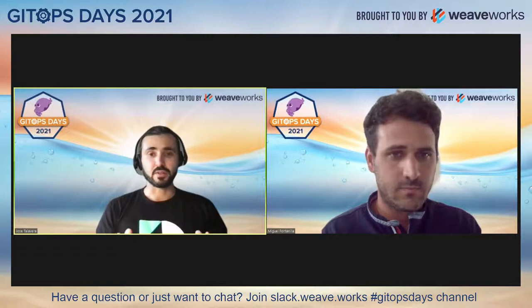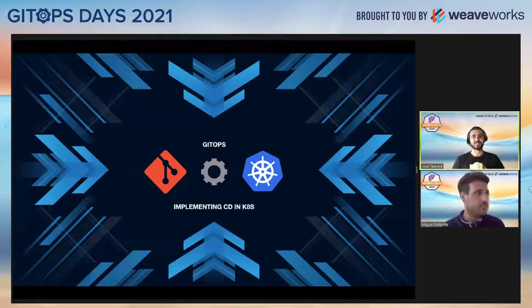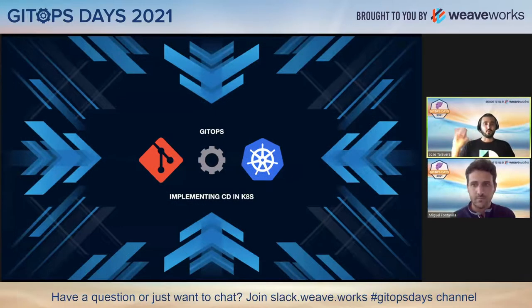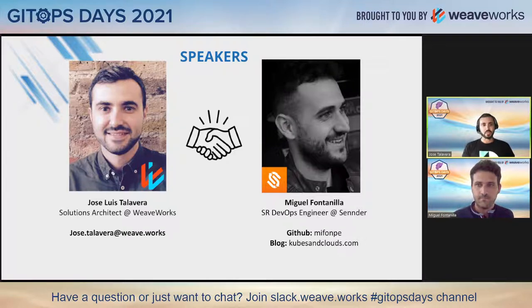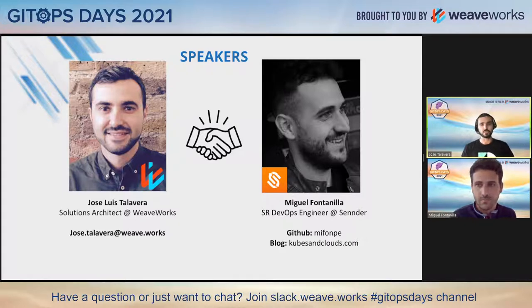I'm Jose Talavera, a Solutions Architect at WeWorks. And because I work for WeWorks, I'll try to be as quiet as possible during this talk. With me, and a lot more important, is Miguel Fontanilla. I have been working with him for quite some time on Kubernetes best practices and on the Spanish community as well. Miguel has been dealing with GitOps extensively and managed to apply his knowledge in multiple companies.